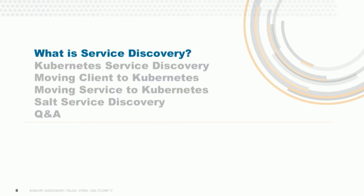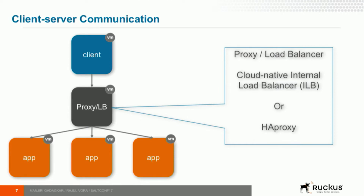So what do we mean when we say service discovery? In a traditional client-server deployment, you have a client deployed and an app deployed, possibly with multiple instances fronted by a proxy or load balancer. In GCP you might get an external or internal load balancer; in OpenStack without a load balancer you might put HAProxy or NGINX in front. All the client needs to know is which IP address to connect to — specifically the IP address of the load balancer or proxy running in front of the app.